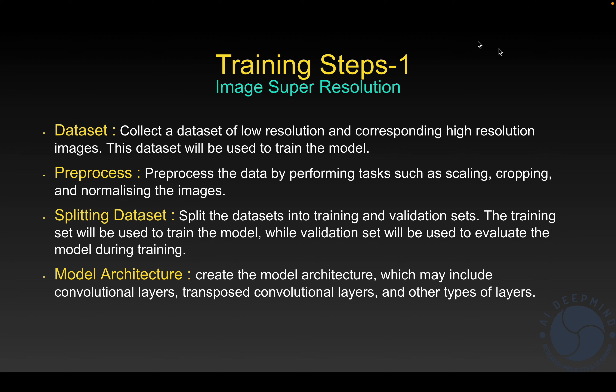The first step is to gather a dataset. We need to collect two kinds of data: low resolution and high resolution images. For example, if we want to upscale images by a factor of four, and our original ground truth images are 800x800, then our low resolution folder will contain 200x200 images — obtained by dividing by the factor of four.